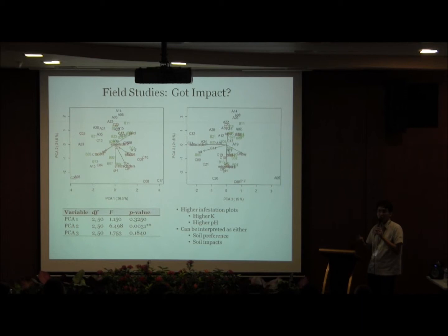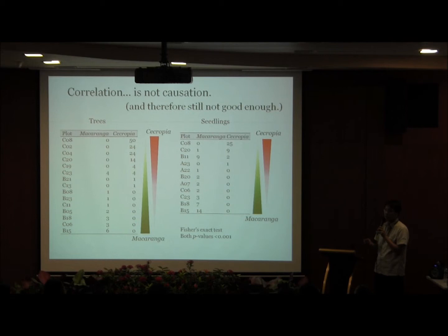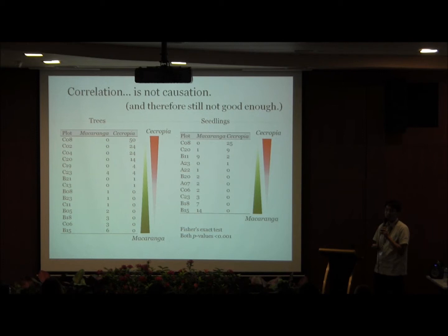Another problem with correlational studies: looking at the data, where you find Macaranga you tend not to find Cecropia, and vice versa. But again, this is just correlation — it could be that Macaranga and Cecropia seedlings simply prefer different habitats. This is the fundamental problem with trying to demonstrate ecological impacts, even after investing two honours students and three years of effort into this research.